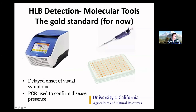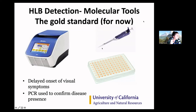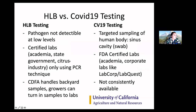Molecular tools are basically a way of detecting DNA or RNA. You're pipetting small volumes of liquid into little containers, heating and cooling them to get them to replicate — that's how you're detecting these genetic codes. When it comes to HLB versus COVID-19 testing, the pathogen at low levels is almost undetectable, and there are a lot of reasons for that.